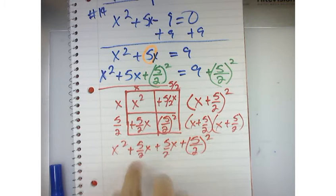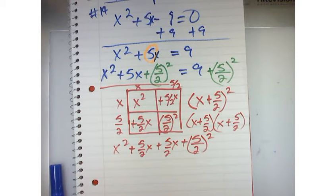Well, when you have 5 halves x plus 5 halves x, what do you end up with? 10 halves x. What's 10 halves? 5.